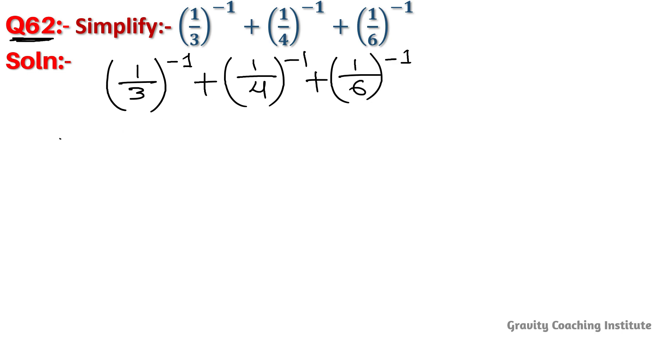We will first convert the negative exponents to positive exponents. Taking the reciprocal, this becomes (3/1)^1 + (4/1)^1 + (6/1)^1.